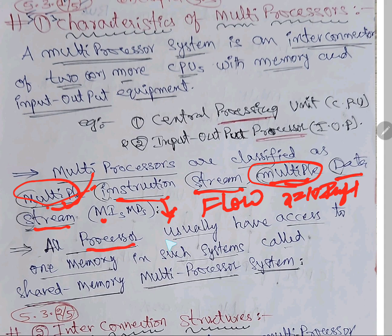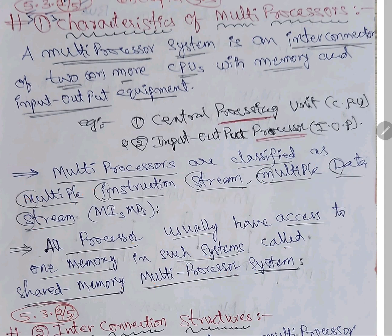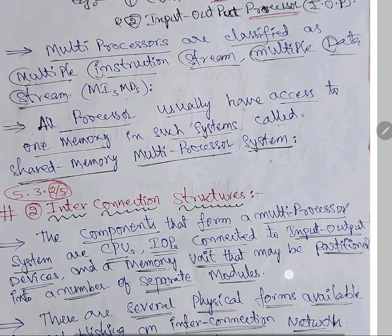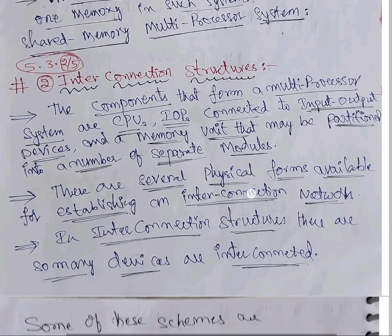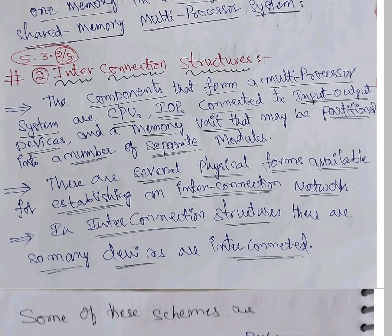All processors usually have access to one memory, but the memory is one — that's why it is called shared memory. In such a system it is called a shared memory multiprocessor. In an exam you can be asked to explain about shared memory multiprocessor — you can write this also, because memory is single. And with this, you can also attach the interconnection structures — how they are connected and how they communicate. That we will see in the next question.